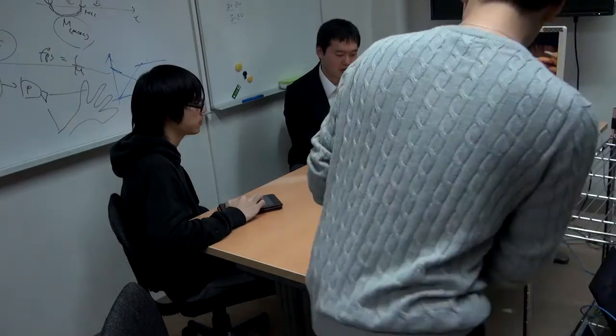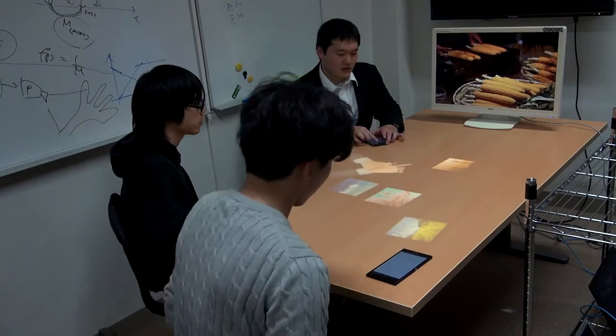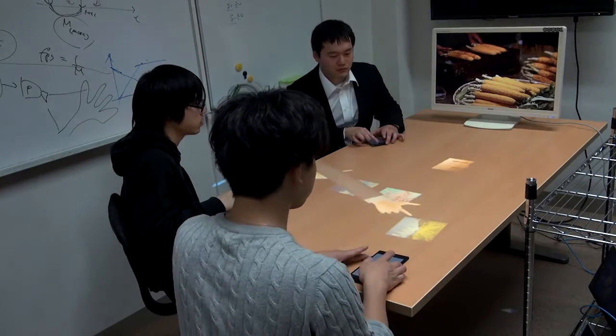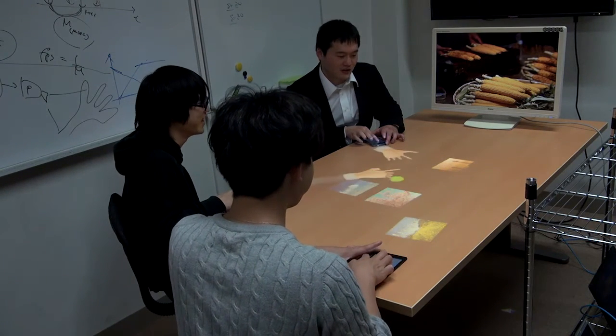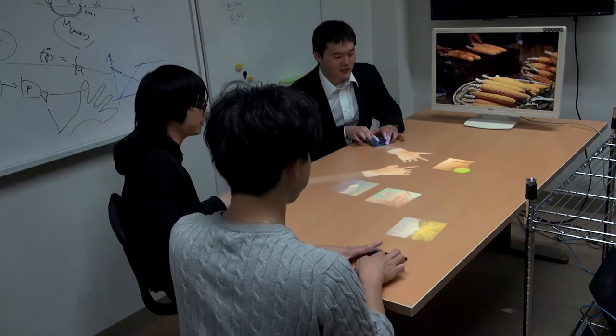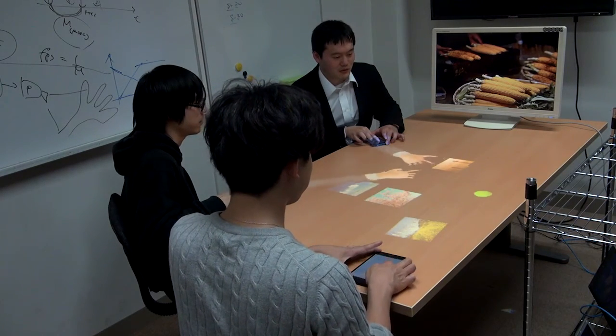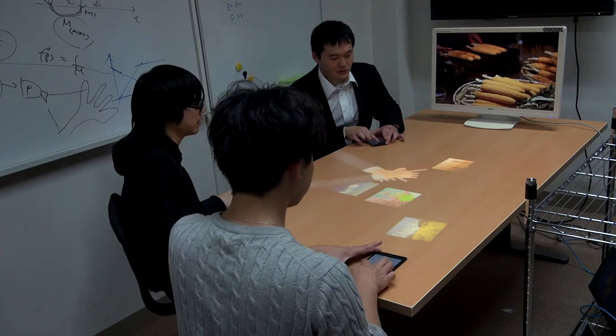We implement an interactive surface application. In such collaborative tabletop system, each projected hand should be extended from the direction of the corresponding user. We propose a user direction estimation method that does not require any additional sensing devices.